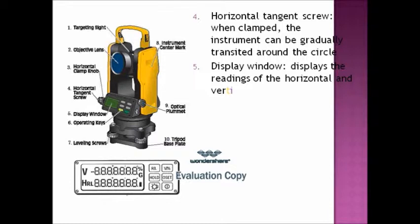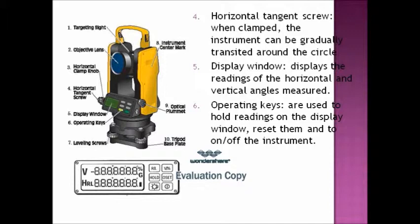Then we have the display window. It displays the readings of the horizontal and vertical angle measured. The operating keys are beside the display window. They are used to hold readings on the display window, reset them, and to turn the instrument on and off.